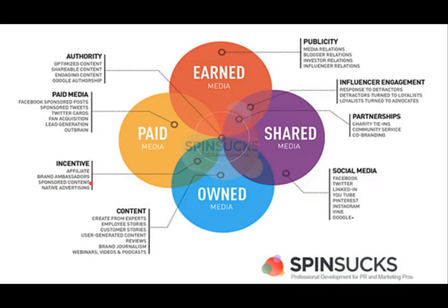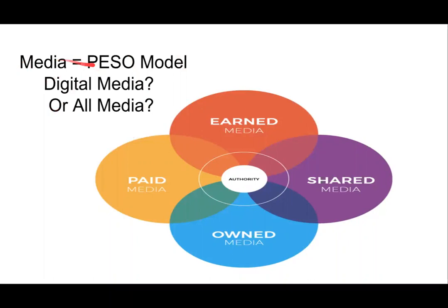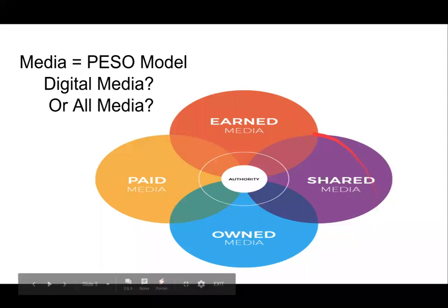Incentives are when you might have an affiliate link — someone shares your store link and you give them some of the income from merchandise, so it's somewhere between owned and paid. Paid media is anything you're paying for. In the middle of all of this is something called authority — essentially meaning the content is quality and believable. The PESO model tends to focus a lot on digital because historically media didn't have that shared component — it was either earned, paid, or owned. When we got social, it became a lot more complicated.